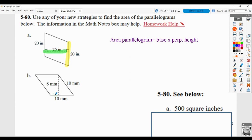For B, your base would be 10 and you'd multiply by your perpendicular height of 8 to give you an answer of 80 square millimeters.